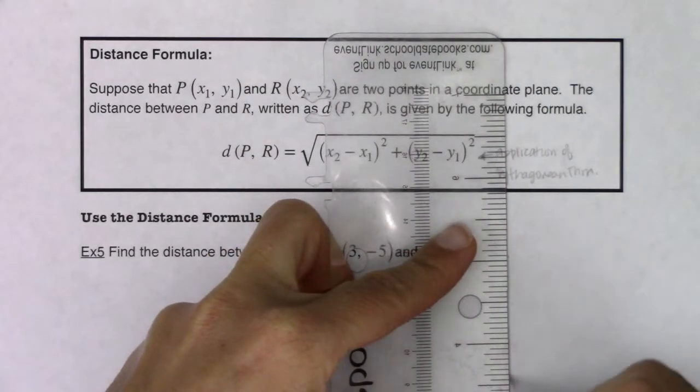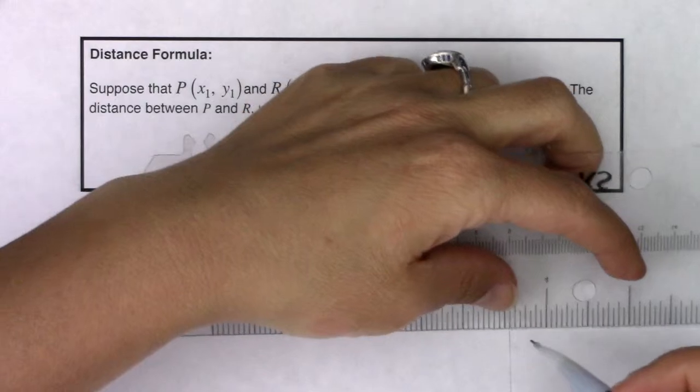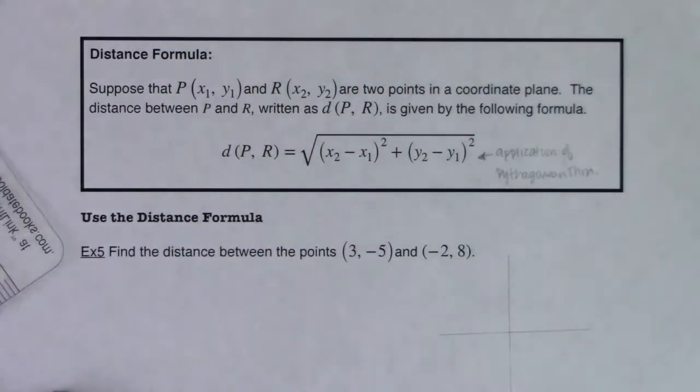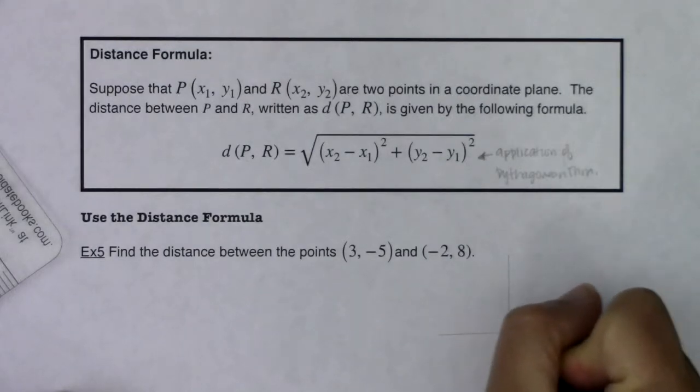So here's what I mean. Let me just do my own little quick and dirty graph. Alright, if I went 3, -5, 1, 2, 3, 1, 2, 3, 4, 5.